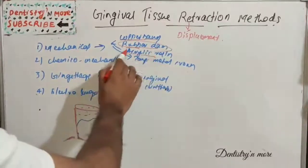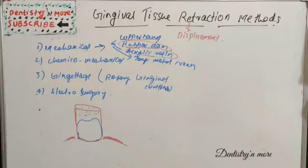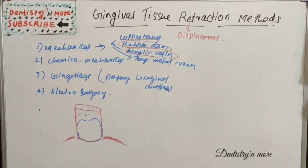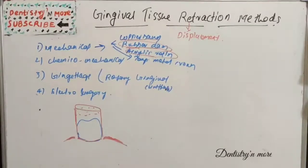For the acrylic resin method, a temporary acrylic resin coping is constructed, the inside is relieved by 1 mm, adhesive is applied, and elastomeric impression material is placed and reseated. The tissue is displaced when the material mechanically fills into the surface. A complete arch impression is subsequently made over the coping, and it becomes an integral part of the impression.